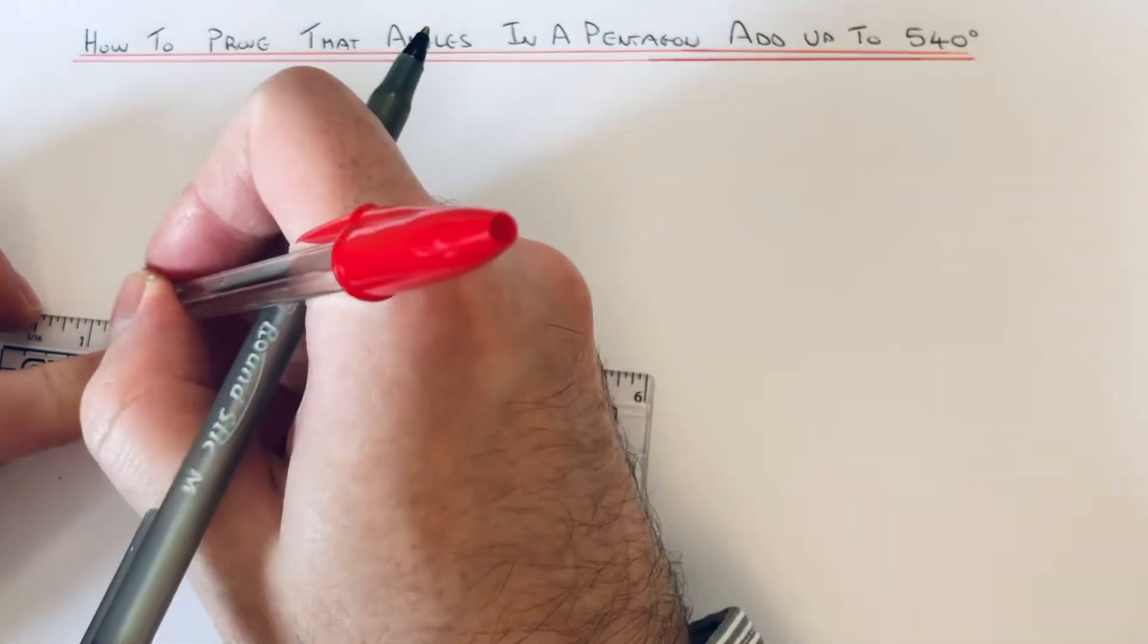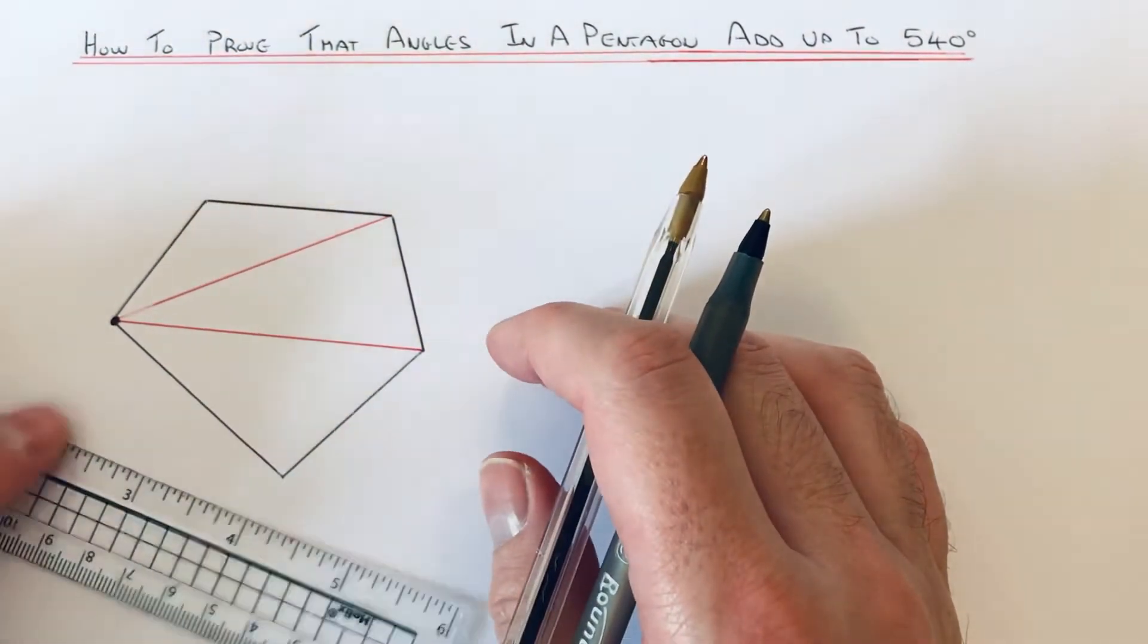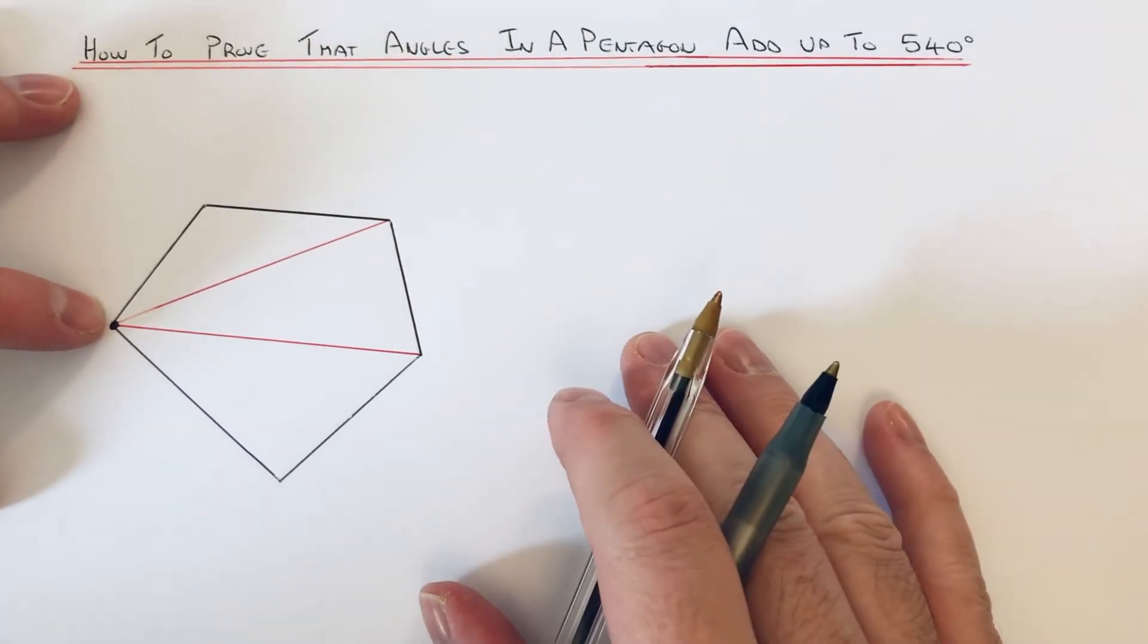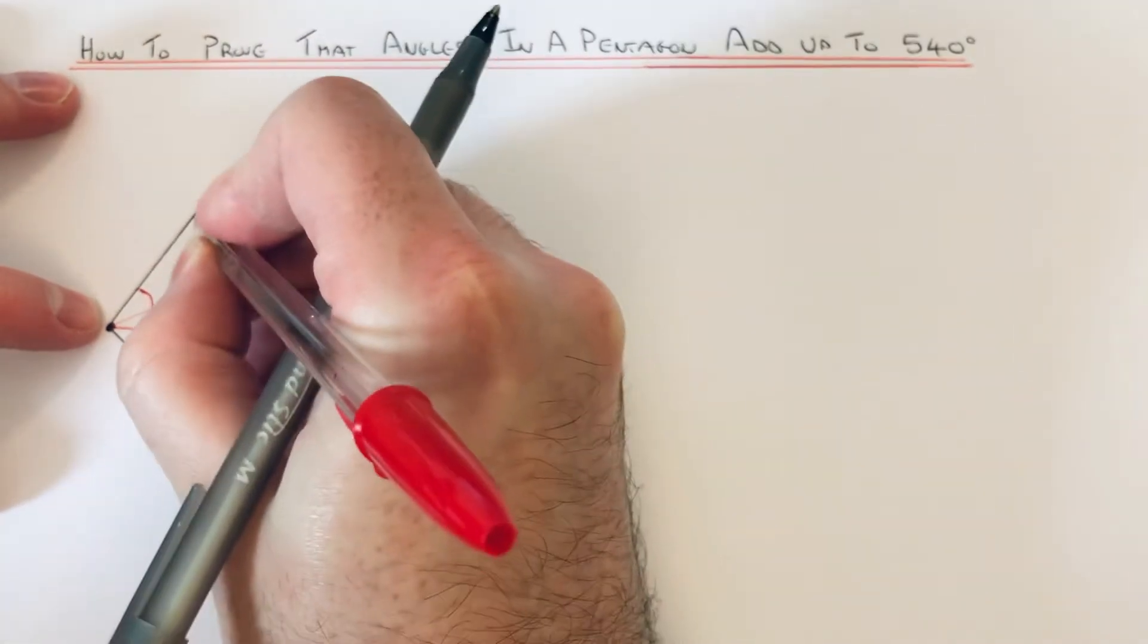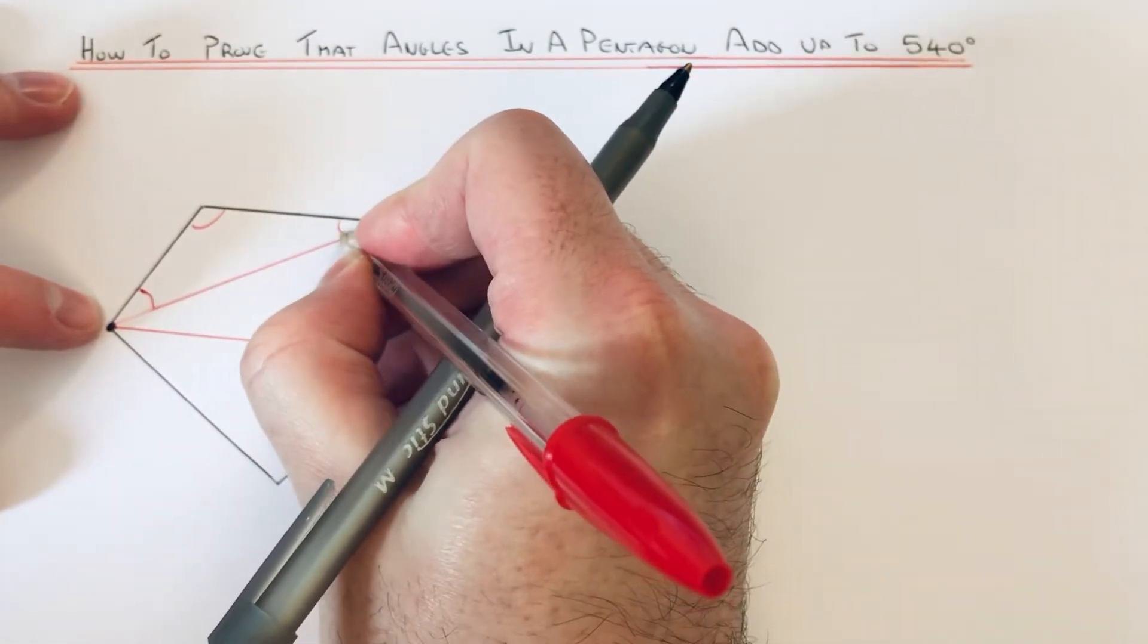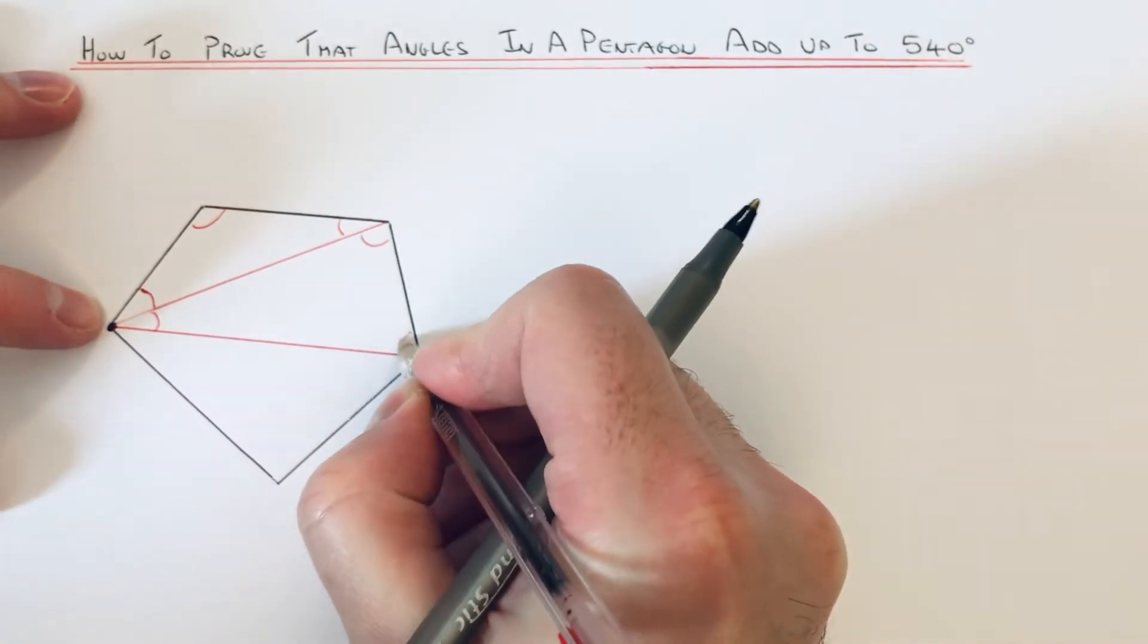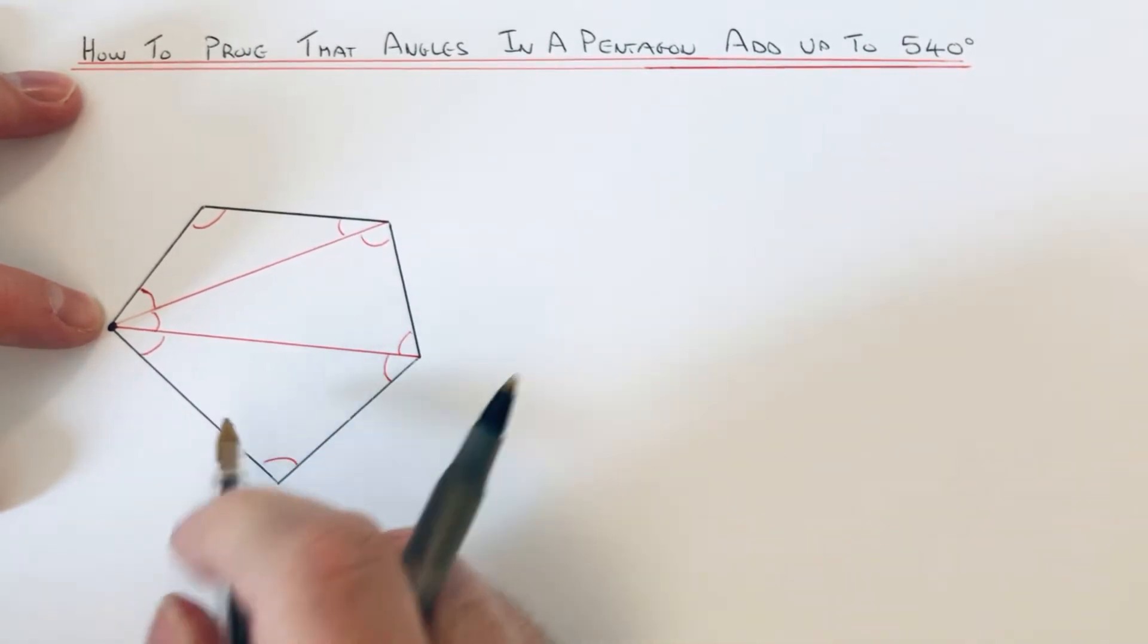Okay, so we know then that the angles in the triangle add up to 180. So these three angles add up to 180, and these three angles here add up to 180, and these three angles here add up to 180.